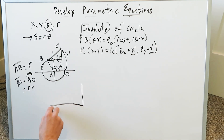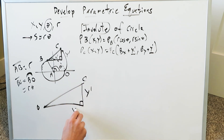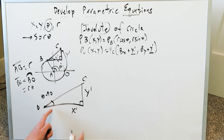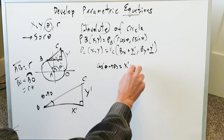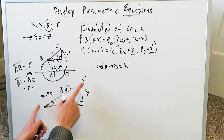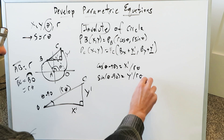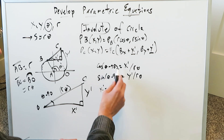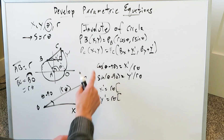We have point B, a right triangle, and point C. We're looking for Y prime and X prime, and we've determined this angle to be theta minus 90. With regards to this angle, cosine of theta minus 90 equals adjacent over hypotenuse, which gives X prime over R theta. Sine of theta minus 90 equals Y prime over R theta. Therefore, X prime equals R theta times cosine of theta minus 90, and Y prime equals R theta times sine of theta minus 90. We now need to apply the cosine difference formula and the sine difference formula.